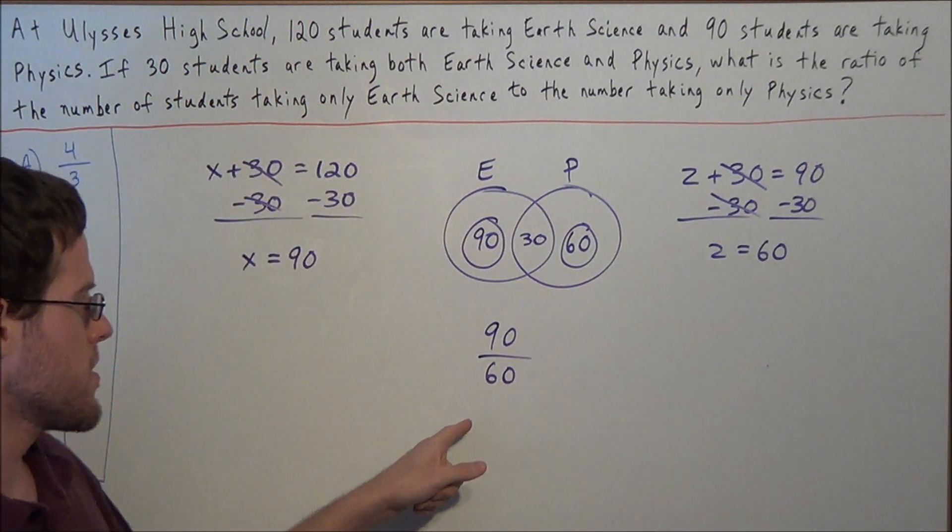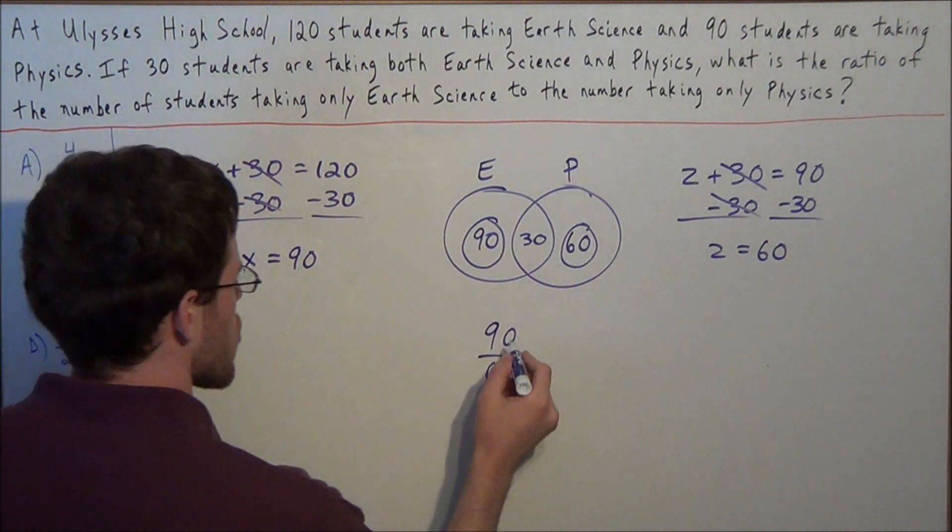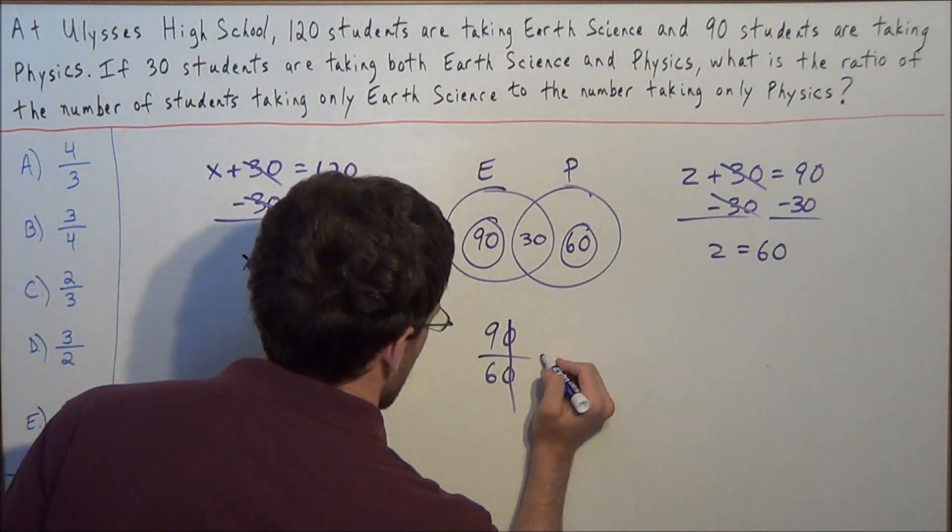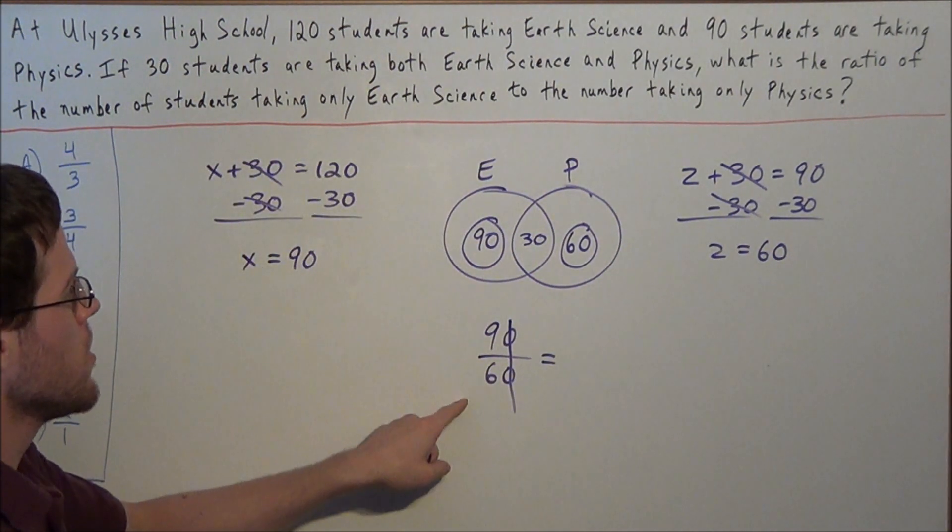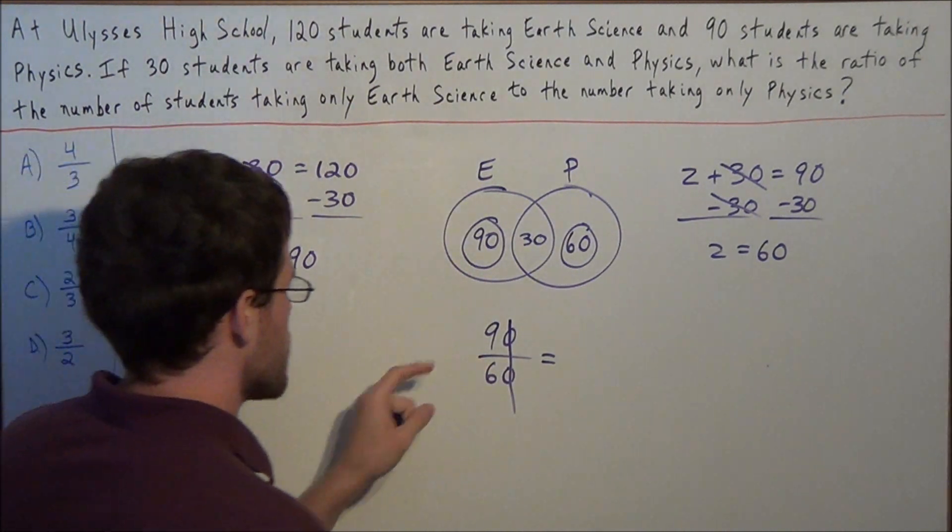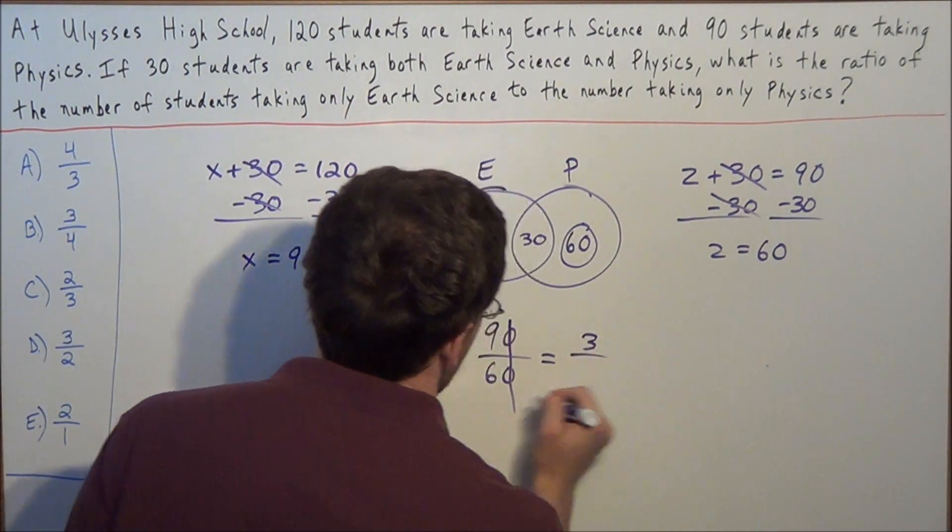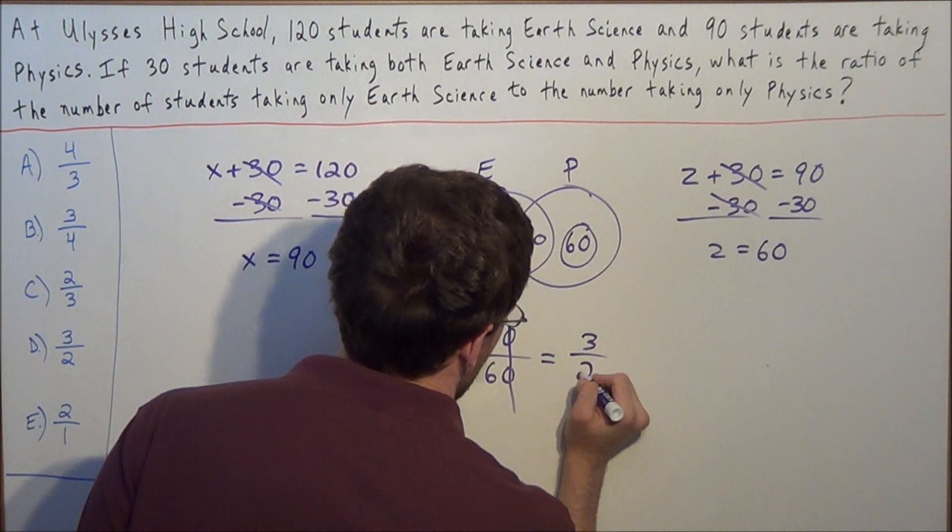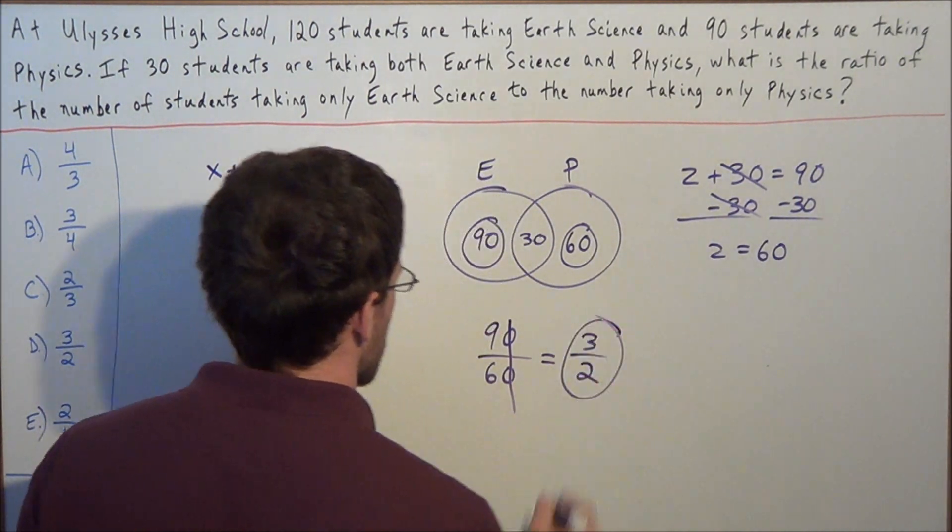And now we need to simplify this ratio. We could cross off common zeros. And now 9 and 6 both have a common factor of 3. 9 divided by 3 is 3. 6 divided by 3 is 2. So the ratio is 3 to 2.